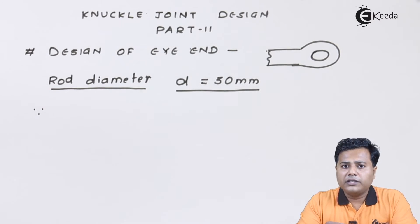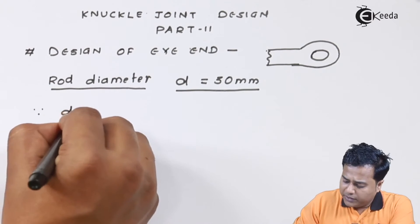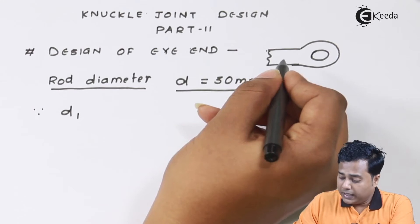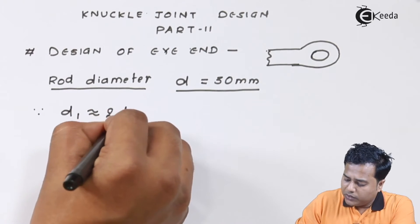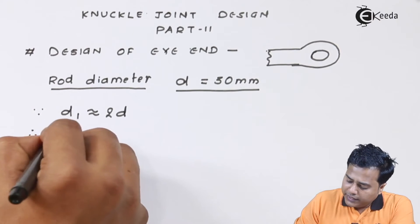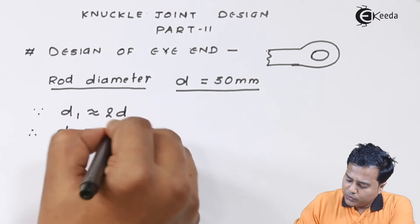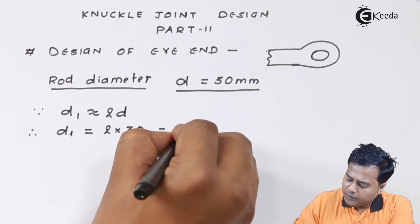We are going to consider the formula. We know that the diameter of knuckle end has to be somewhat equal to two times the diameter of rod, which we already have seen in the formula section. Therefore d₁ is equal to twice of 30, that makes it 60 millimeter.